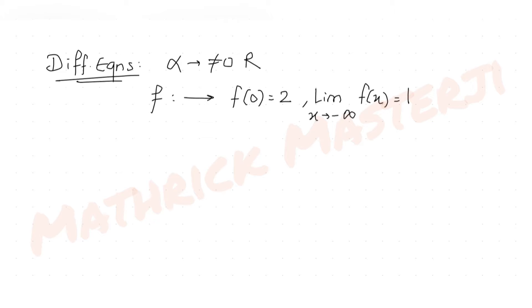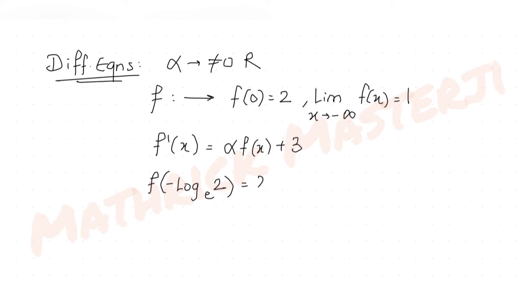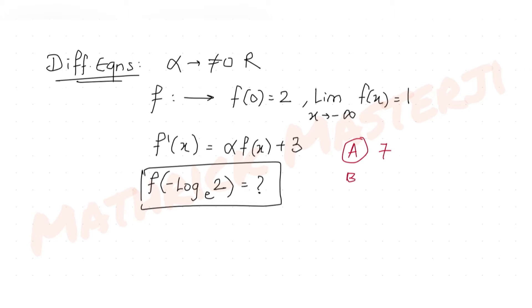The differential equation given is f'(x) = α·f(x) + 3, for all x in ℝ. The question asks us to find the value of f(−log₂ to the base e). The answer choices are 7, 9, 3, and 5.